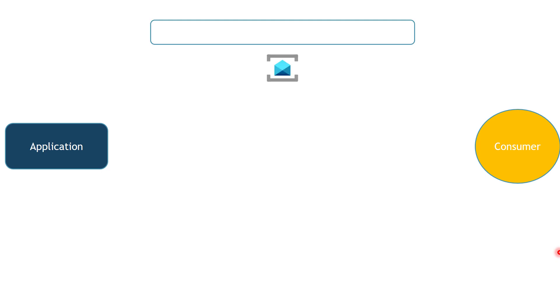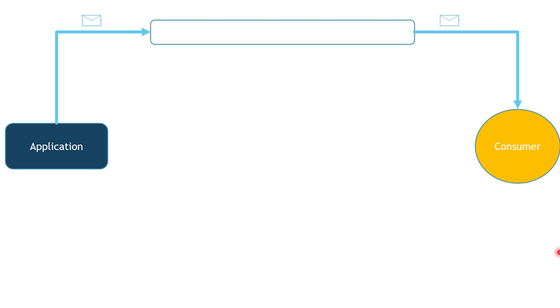Let's assume that we have an application and a consumer. You may call the application a producer, publisher, or any kind of application that produces or publishes events or messages that the consumer is interested to process. We will have a Message Queue that could be implemented using Azure Service Bus. From one side, the application sends messages to the Message Queue, and from the other side, the consumer receives and processes those messages.